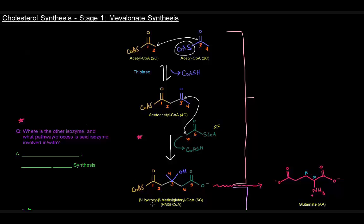What we get is this molecule called beta-hydroxy-beta-methylglutaryl-CoA, which is a six-carbon molecule, otherwise known as HMG-CoA. The enzyme that catalyzes this reaction is called HMG-CoA synthase, which you might have come across. There is another isozyme of HMG-CoA synthase. I have a question here: where is the other isozyme and what pathway or process is it involved in?